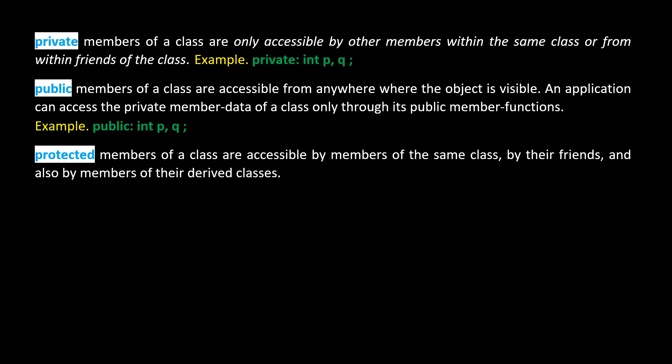Protected members of a class are accessible by members of the same class, by their friends, and also by members of their derived classes. Here is an example of how protected members are declared.